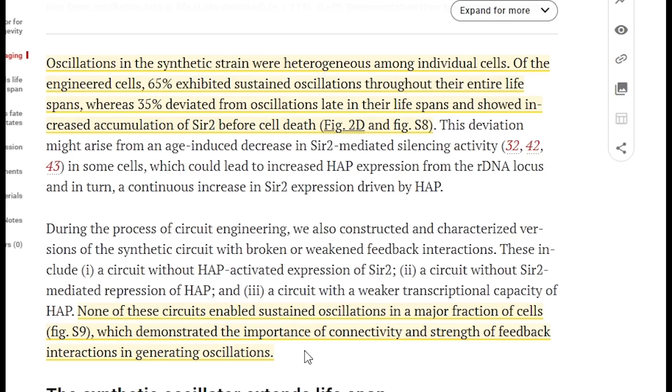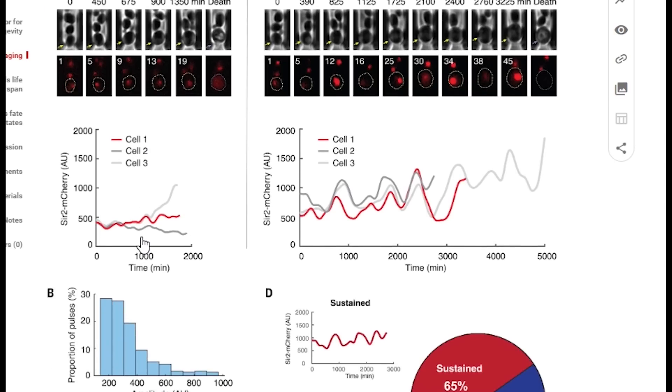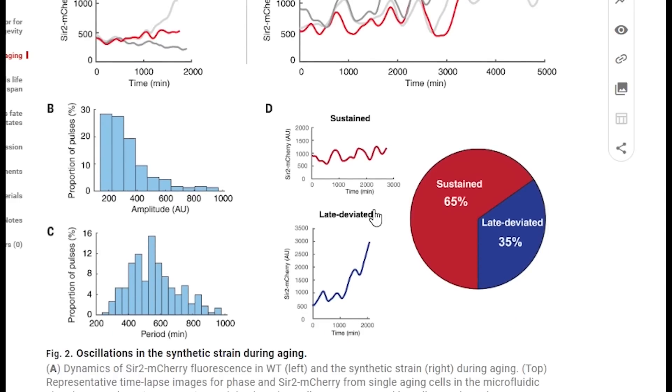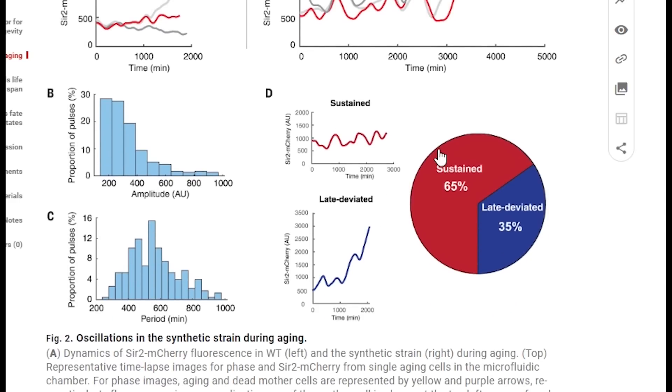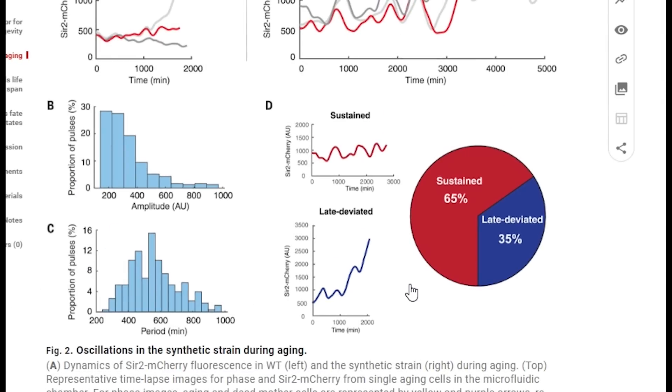Now despite this, with their robust system not all of their cells actually showed sustained oscillations. Within the population they could actually see two groups. Those that did oscillate, called sustained, and those that continued to increase SIR2 expression and they deviated. But the deviated were a minority and by and large the genetic modifications that they made in the system worked.